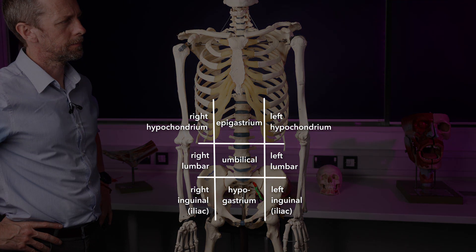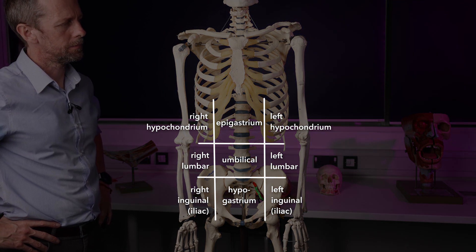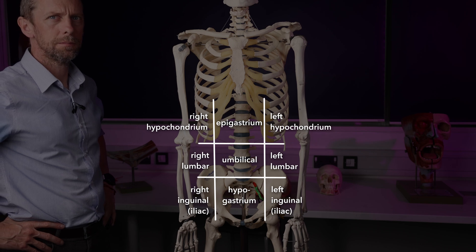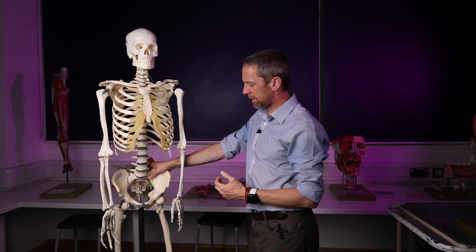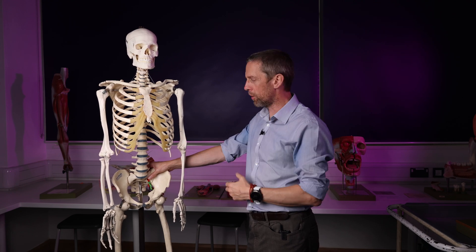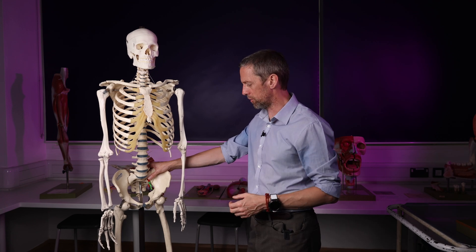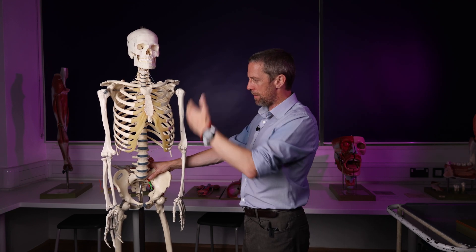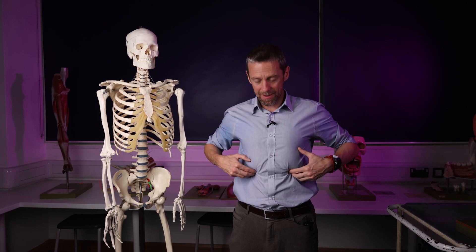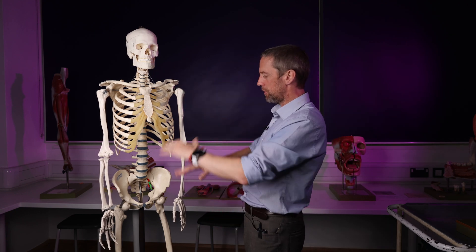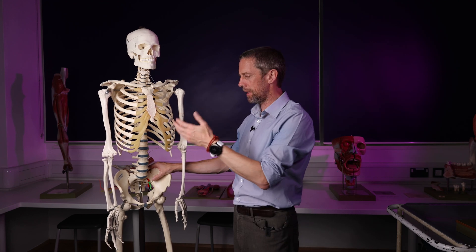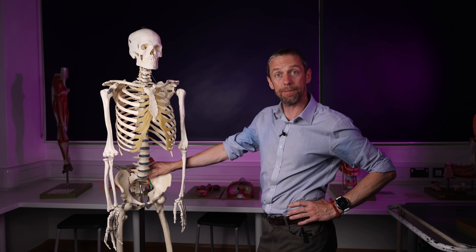We know better now. I promised you some terminology, and terminology you have. That is how we can describe to one another regions within the abdomen — where somebody might be sensing some pain, where we might have found a lump or mass or tumour, where we might find an organ. Remember the surface anatomy landmarks; if you can, palpate them on yourself or on somebody else, and imagine those four or nine lines and the names of the regions. See you next week.